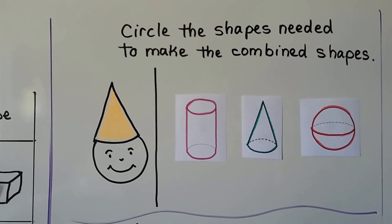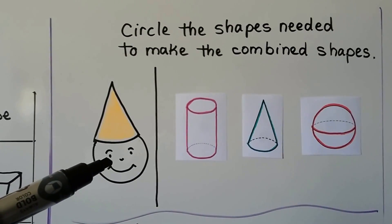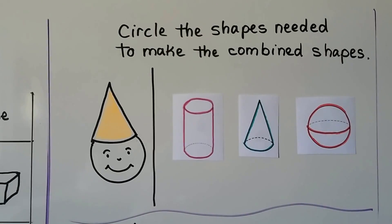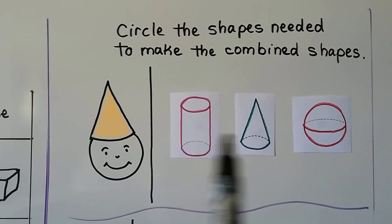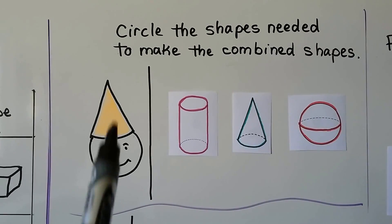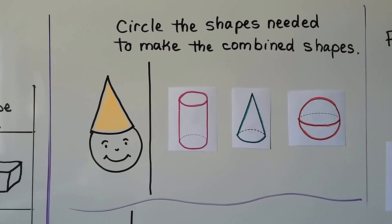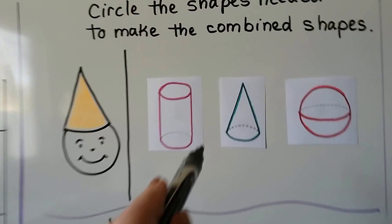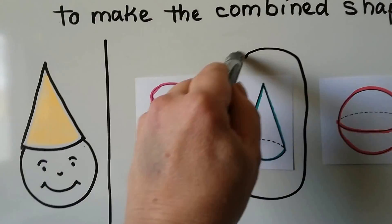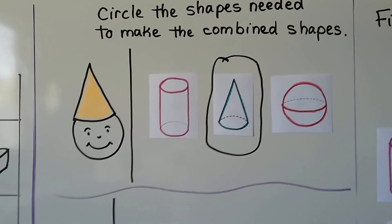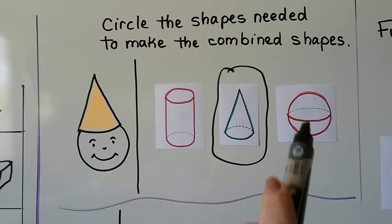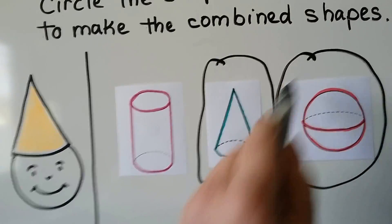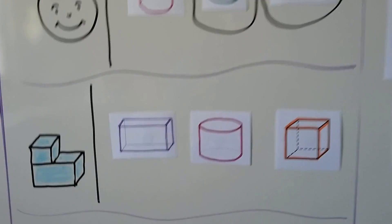Now we need to circle the shapes needed to make the combined shapes. Here we have a smiling person wearing a party hat. Which shapes would we need to make this combined shape? I see the cone — we need the cone because that's the hat, and for the face it's a sphere. Those are the shapes we would need to combine to make that one.